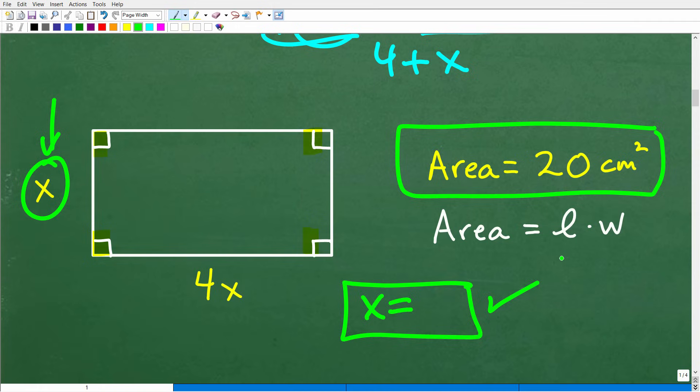And most algebra word problems work the same way. You're going to assign a variable to represent something, a variable or variables, depending on the type of problem that you're dealing with. And then you're going to use all the information in the problem to construct an equation. But in this particular problem, we need to know this simple formula of the area of a rectangle. And the area of a rectangle is equal to the length times the width.